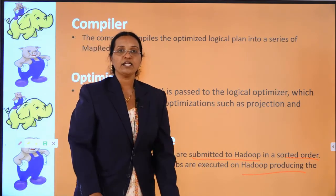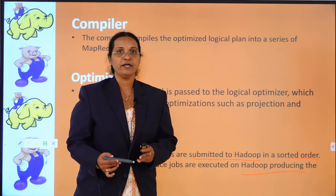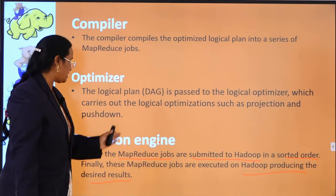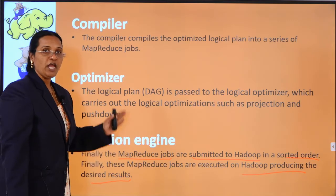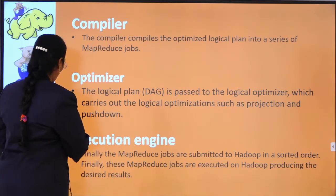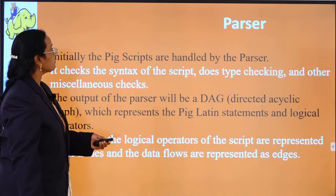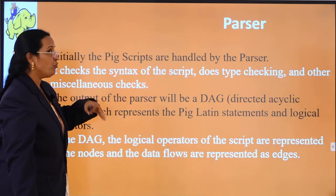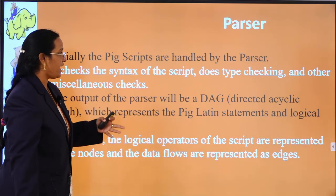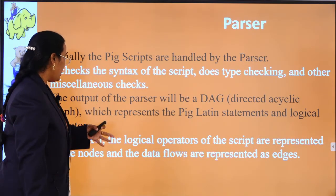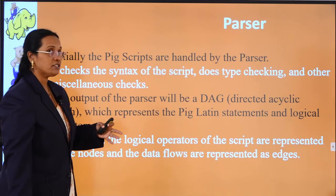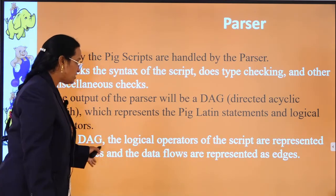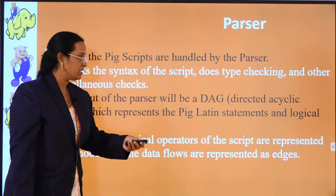These are the important components of Pig. To recap: the output of the parser is a DAG (Directed Acyclic Graph), which consists of logical operation scripts. Logical operations are represented as nodes, and data flows are represented as edges. The compiler's duty is to compile the optimized logical plan into a series of MapReduce jobs.